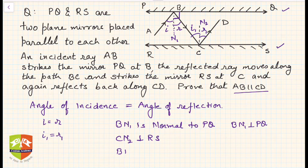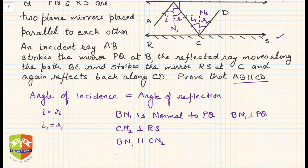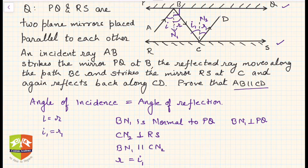That means BN1 is parallel to CN2. So angle r is equal to i1. If these two lines are parallel, then i1 must be equal to r, right?